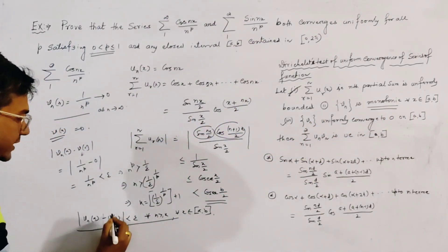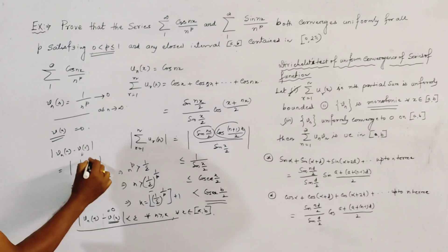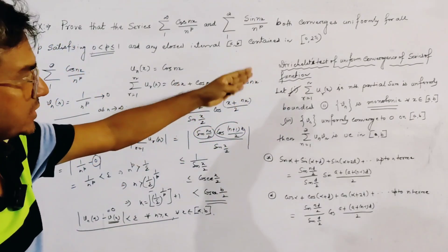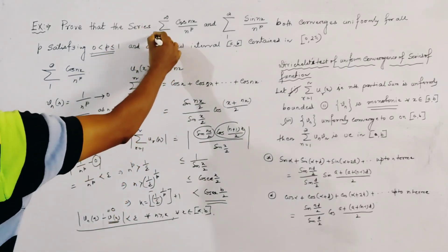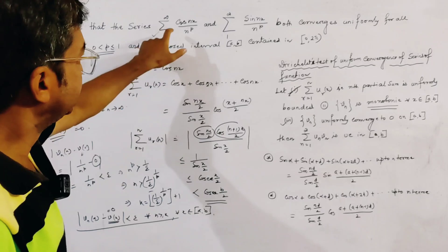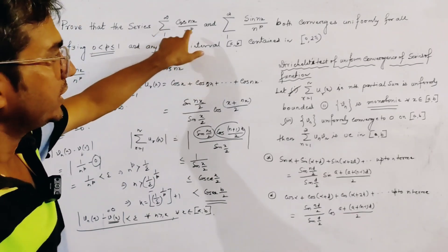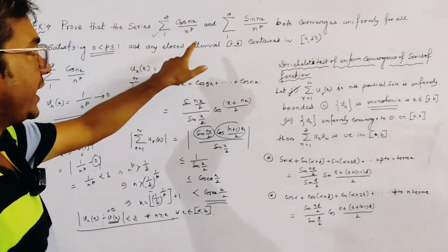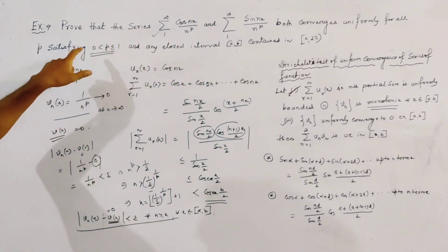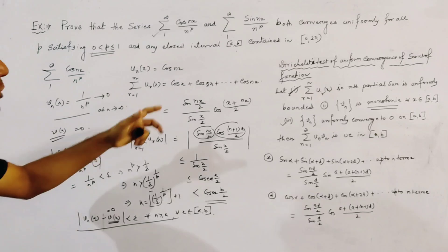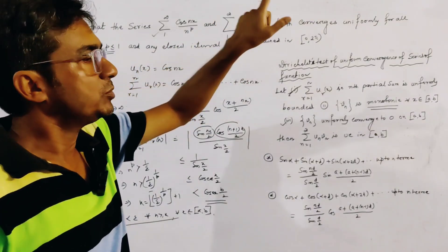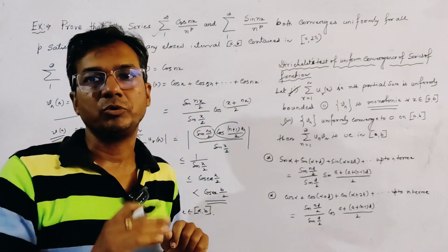Since V(x) = 0 as already proved, all conditions of the Dirichlet test are satisfied by the series of functions. So we have proved that this series of functions converges uniformly for all x in [a,b] and for all p with 0 < p ≤ 1. Similarly, the sine series can also be shown to converge uniformly. Thank you.